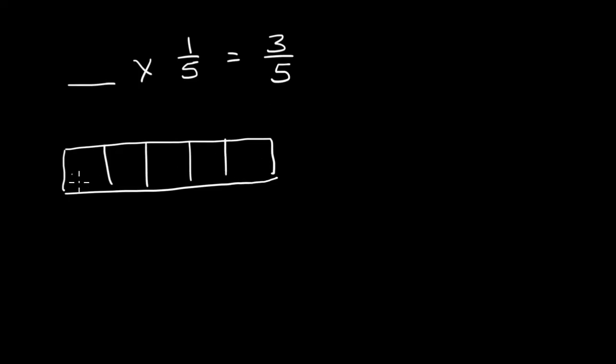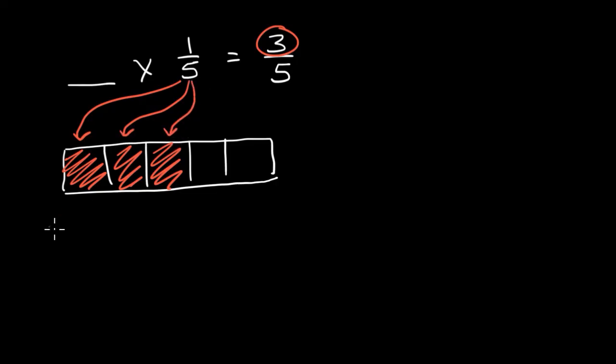So this is five-fifths here, although none of them have been filled in. And if I wanted to represent three-fifths, I could fill in three of them. So three-fifths would be one, two, and three. So how many times did I have to multiply one-fifth by? That's a fifth, so that's one times one-fifth, two times one-fifth, and three times one-fifth. I had to multiply it by three. So three times one-fifth is literally three-fifths, or three one-fifths, depending on how you want to think about it.